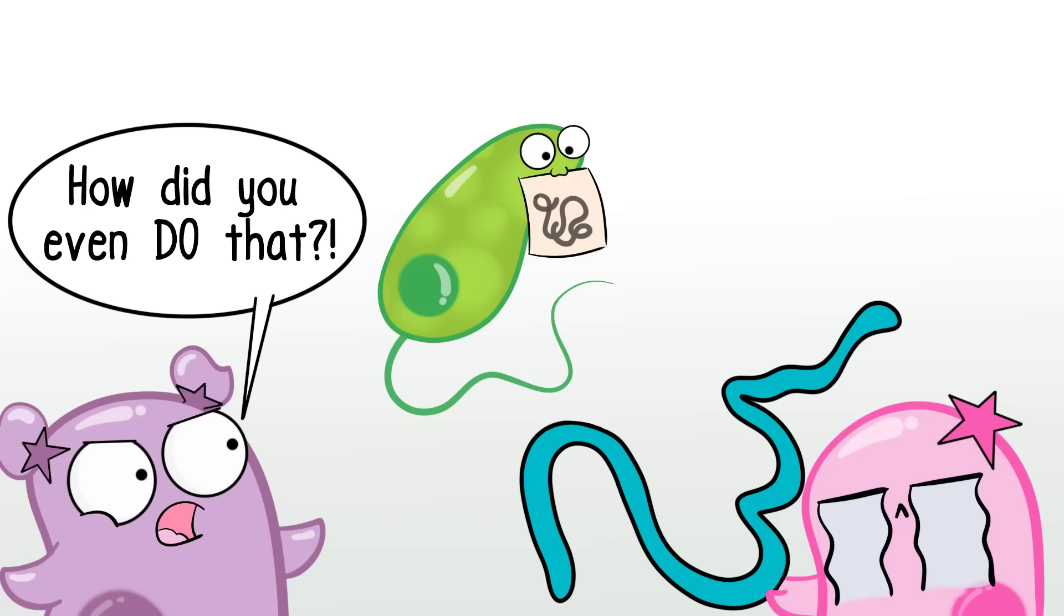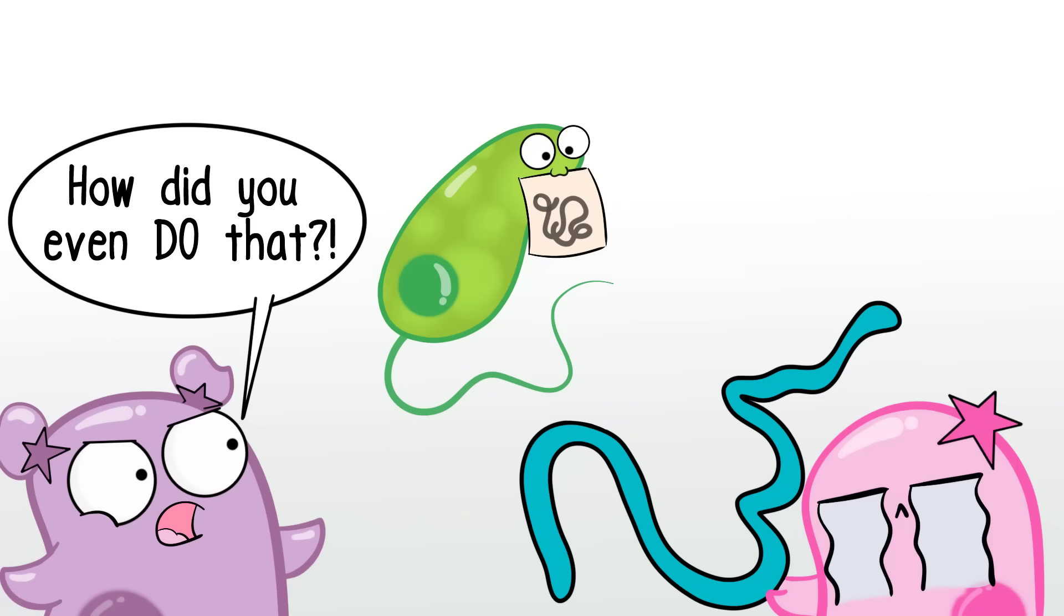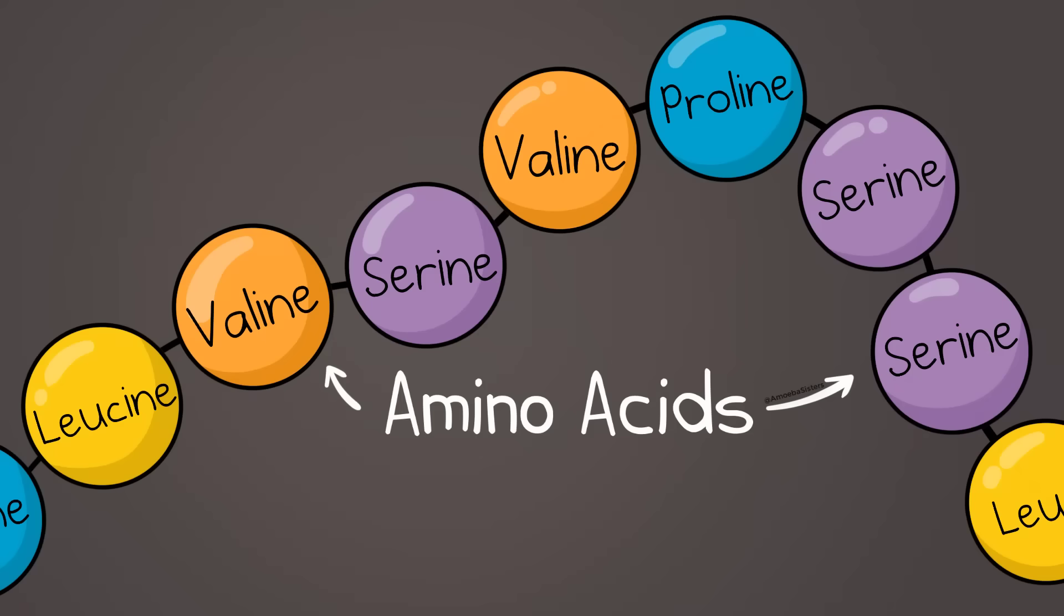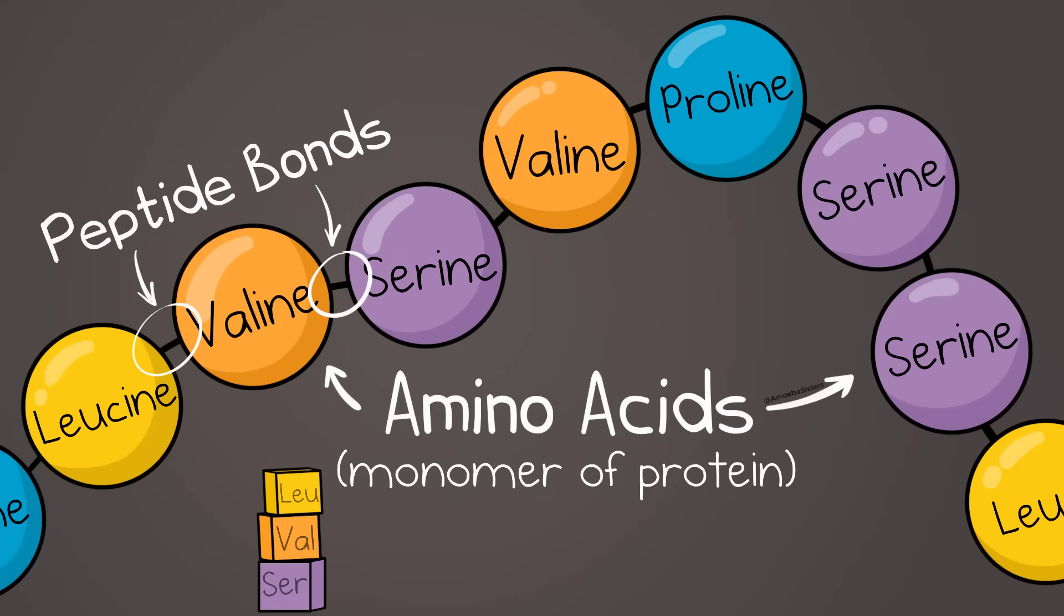When we talk about the way proteins are folded, we need to understand the different levels of protein structure. Because there are different ways of folding that can happen in the different structural levels. The first level of protein structure is primary structure. This is the sequence of amino acids that make up a protein. Amino acids are the monomer, which means the building block, of a protein. They are held together by peptide bonds.